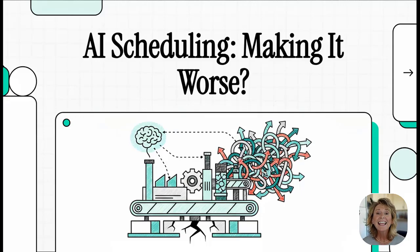You hear it everywhere, right? AI is coming to manufacturing. It's supposed to be this magic wand that's going to finally sort out the chaos on the factory floor. But what if I told you it's not just failing to fix it? What if adding AI is actually making things worse?